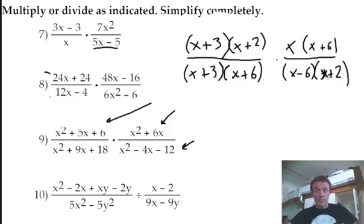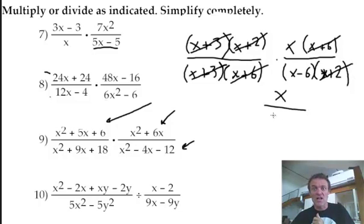Now just look, I like these because you just look all over the place and you go, I'll do x plus 6, x plus 6, x plus 3, x plus 3, x plus 2, x plus 2. All that's left is an x over an x minus 6. Do remember that rule, there's nothing here about anything changing around, there's not that negative 1 rule. x minus 6, 6 minus x, there's nothing there. That's the answer, x over x minus 6.